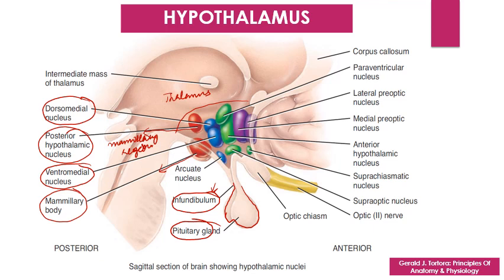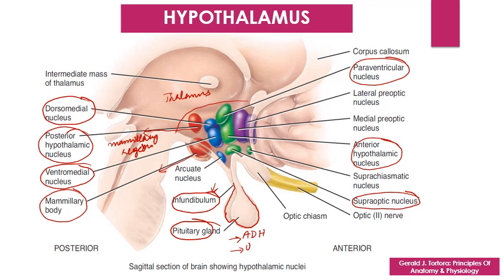The third region is the supra-optic region, which contains the paraventricular nucleus, the anterior hypothalamic nucleus, and the supra-optic nucleus. Axons from the paraventricular and supra-optic nuclei form the hypothalamo-hypophysial tract, which extends through the infundibulum to the posterior lobe of the pituitary gland. These nuclei are concerned with the secretion of anti-diuretic hormone and oxytocin.